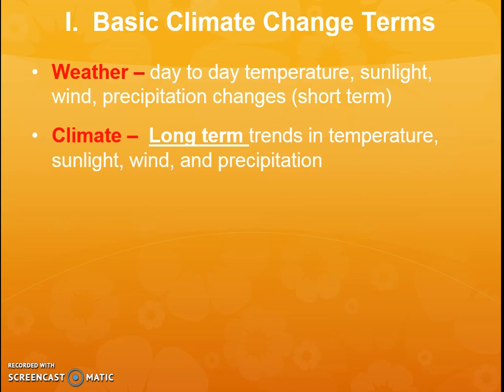This is compared to climate, which is overall how temperature, precipitation, sunlight, and wind are in the long term — big picture trends. Weather is short term; climate is long term. That's a big difference, because when people are confused about climate change, they say, 'Oh, it's cold today, it's not climate change.' But one single day doesn't matter because climate is a big picture overall thing.